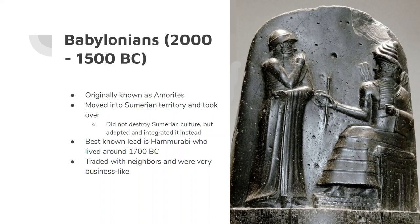The best known leader of Babylonia is Hammurabi — and this is supposed to be Hammurabi sitting on his throne right here if you're curious about the picture. Hammurabi lived around 1700 BC and is going to create a strong, stable empire. He probably had, if not the first empire, the biggest empire of his day. The Babylonians traded with their neighbors — they were very businesslike and weren't about warfare or anything like that.